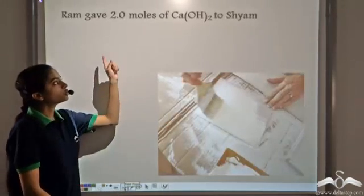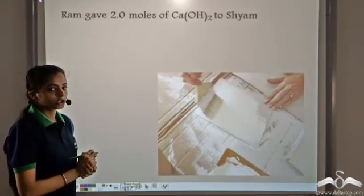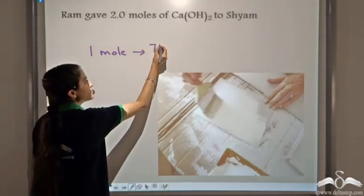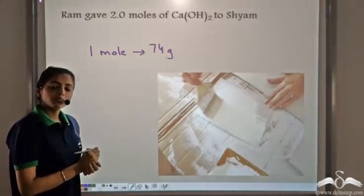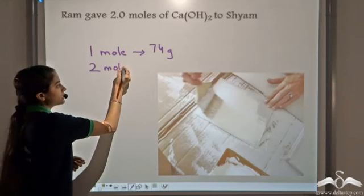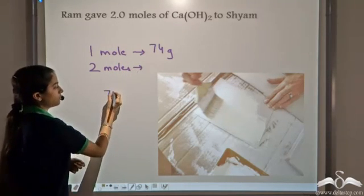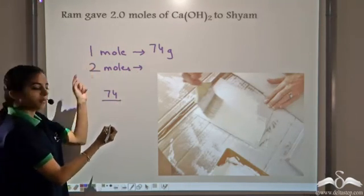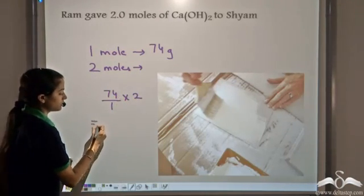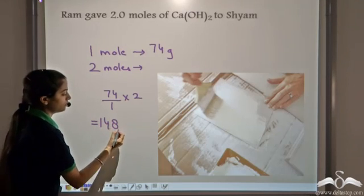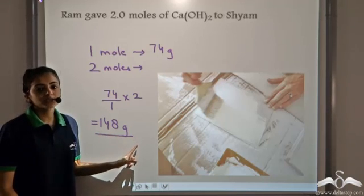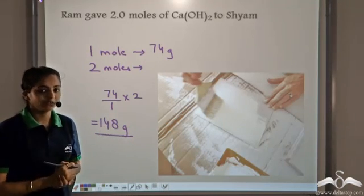Ram had given 2 moles of calcium hydroxide to Shyam. Since 1 mole weighs 74 grams (the gram molecular mass of calcium hydroxide), using the unitary method, 2 moles of calcium hydroxide weighs 74 x 2 = 148 grams. So Ram had given 148 grams of calcium hydroxide to Shyam for whitewashing.